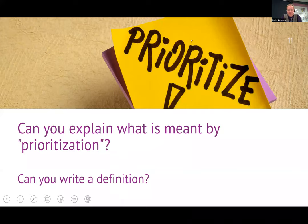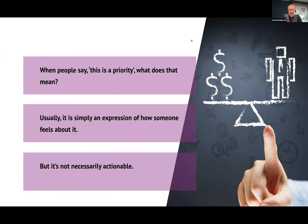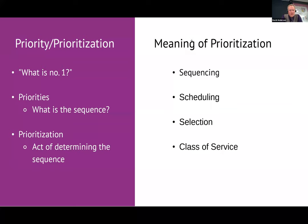First of all, people use the term 'prioritization' a lot. Do you actually know what you mean by it and can you write a definition? We find that when people say something is priority, it's usually just an expression of how they feel about it — it might be its urgency, its importance, or its position in a sequence. The fact that something is 'priority' isn't necessarily actionable, especially if everything is priority. Priority can mean what's our number one thing, or it might imply a sequence.